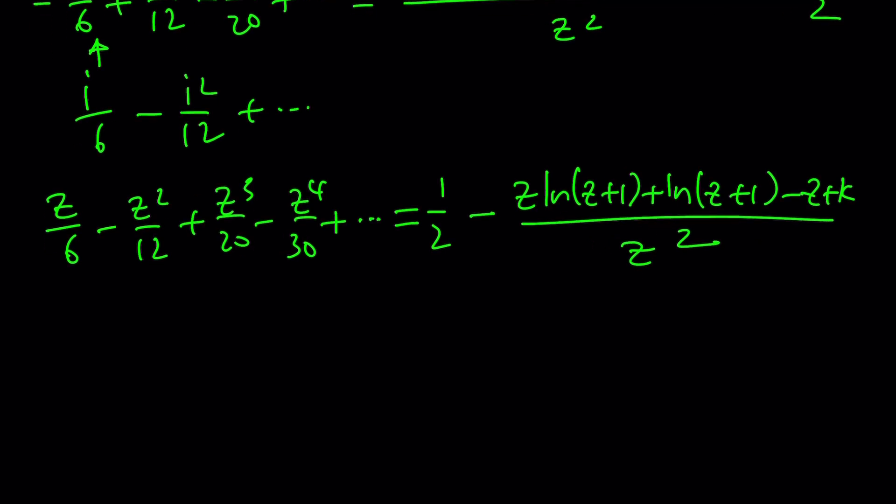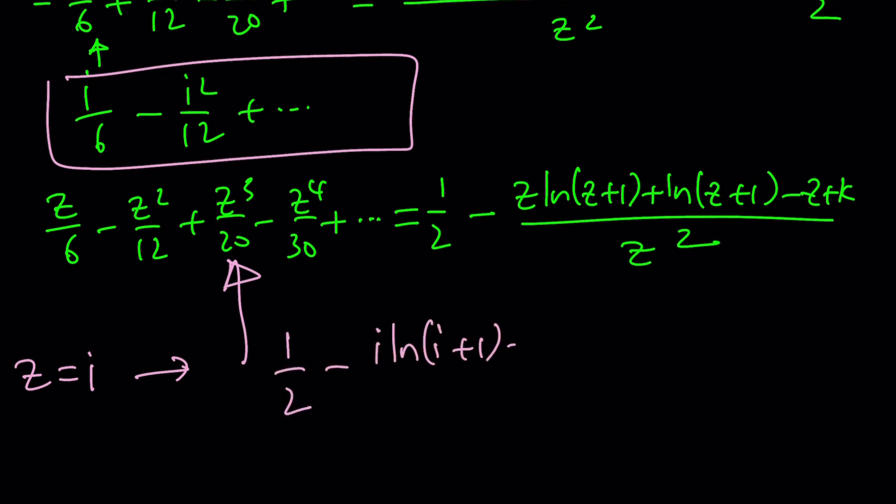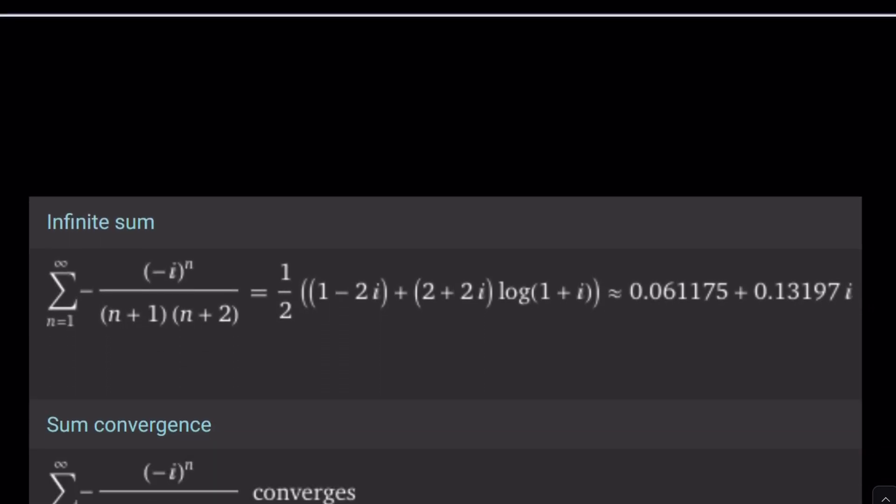Now if you replace z with i, you're going to get the answer. This sum is going to give you what you're looking for and the right hand side is more important. It's going to be like one half minus i ln i plus 1 plus ln i plus 1 or 1 plus i minus i plus k divided by i squared which is negative 1. You can kind of negate it, add one, make a common denominator. Let's take a look at what this is going to look like because Wolfram Alpha already did the work for me and for you too.